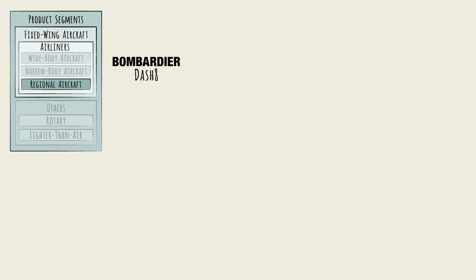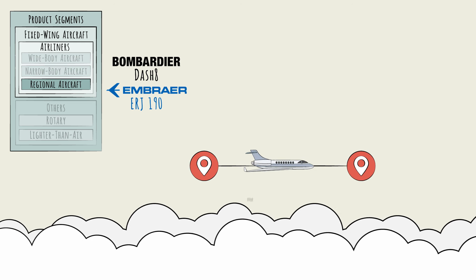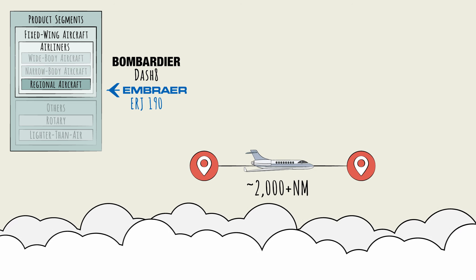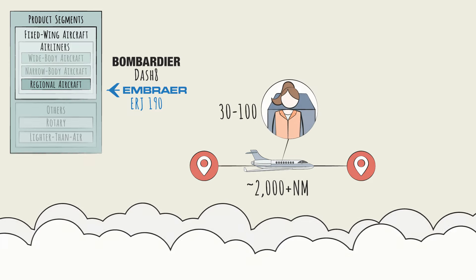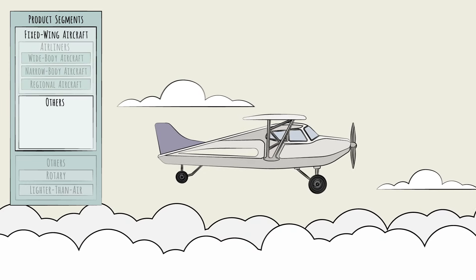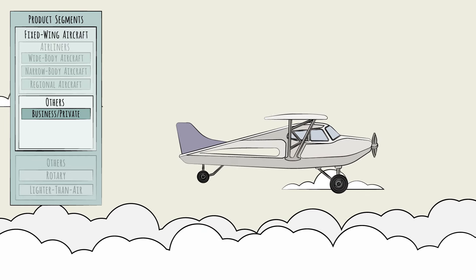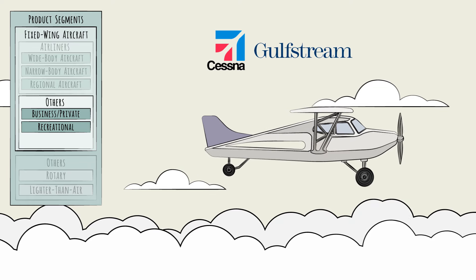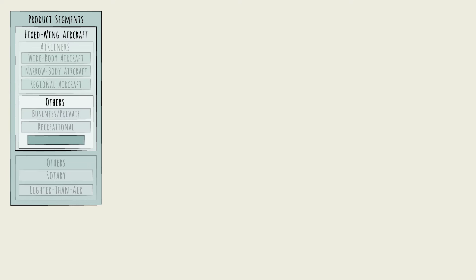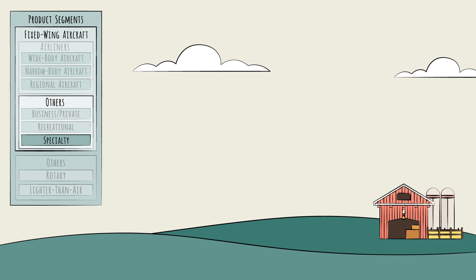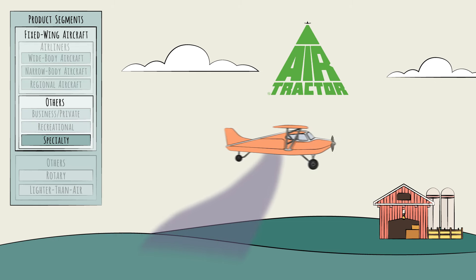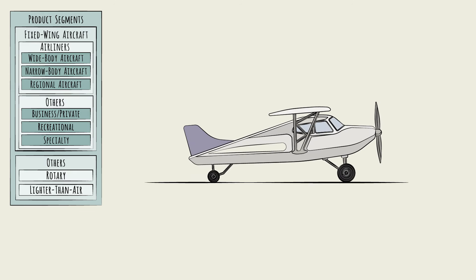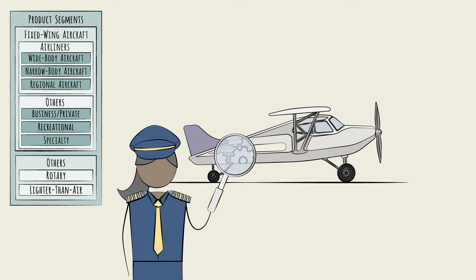The final segment is regional aircraft, like the Bombardier Dash 8 and the Embraer ERJ 190. These planes have the shortest ranges — around 2,000 plus nautical miles — and the smallest load factors, 30 to 100 passengers. There are smaller segments as well, served by smaller planes. For example, private or recreational aircraft, made by companies like Cessna, Gulfstream, and Beechcraft. There is also a wide variety of specialty aircraft that addresses specific needs, like agricultural spraying or firefighting. Even the smallest of these planes are tremendously complex products. In the next chapter, we'll explore the value chain that makes all of this possible.